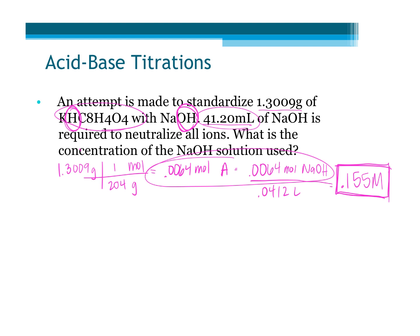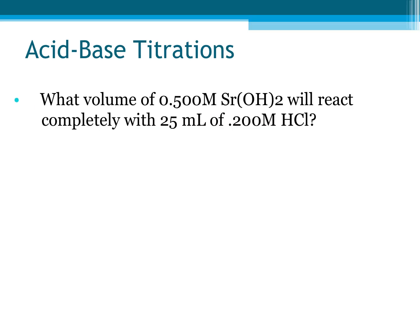We're going to try this last one here that does not have a one-to-one ratio. So I want to make sure we can pick this out correctly. What volume of a 0.5 molar strontium hydroxide will react completely with 25 mL of 0.2 molar HCl? I've got information about my acid, so I'm going to go ahead and go with that first. 0.2 molar equals moles of HCl over 0.025 liters. It gives me 0.005 moles of HCl.